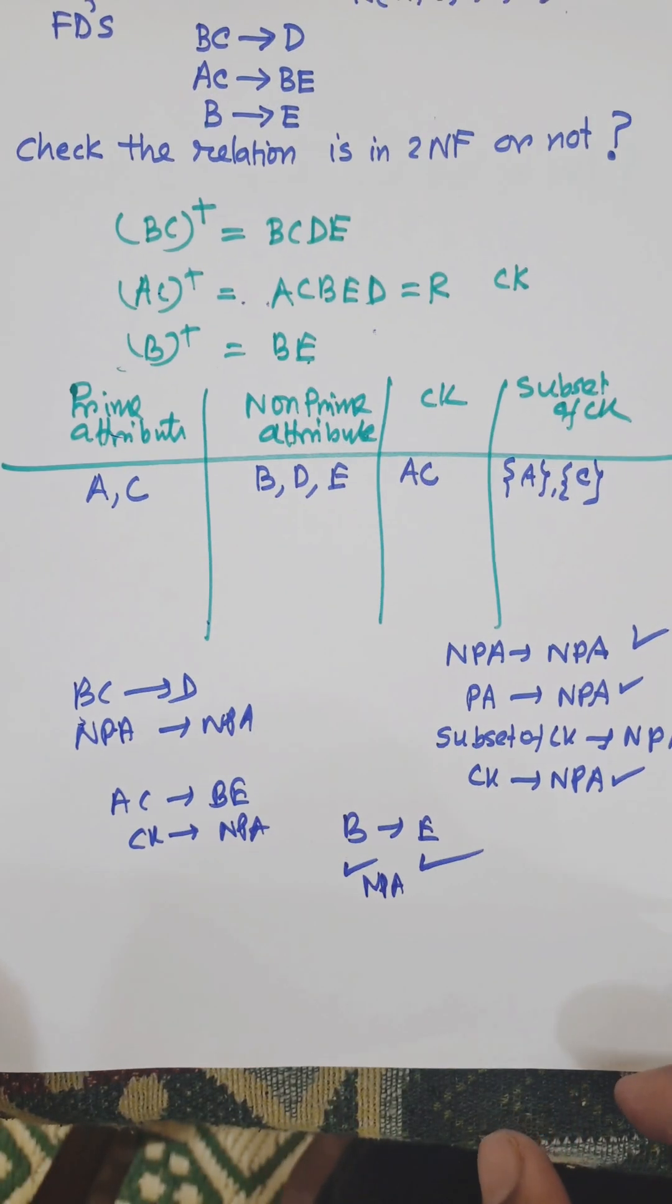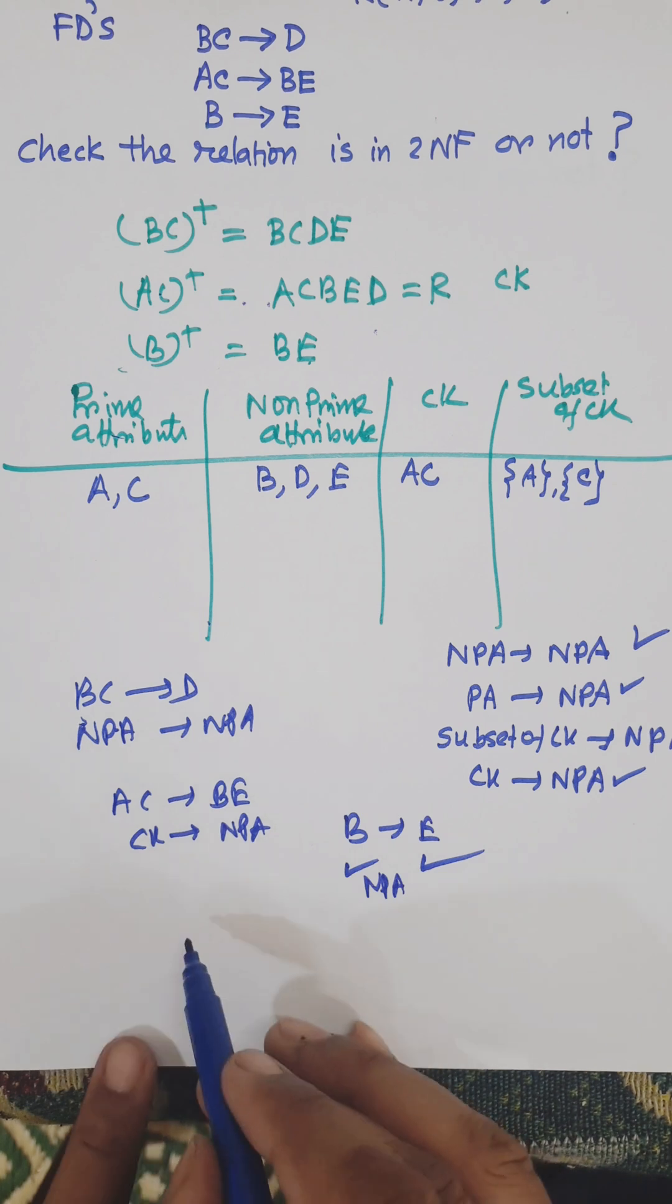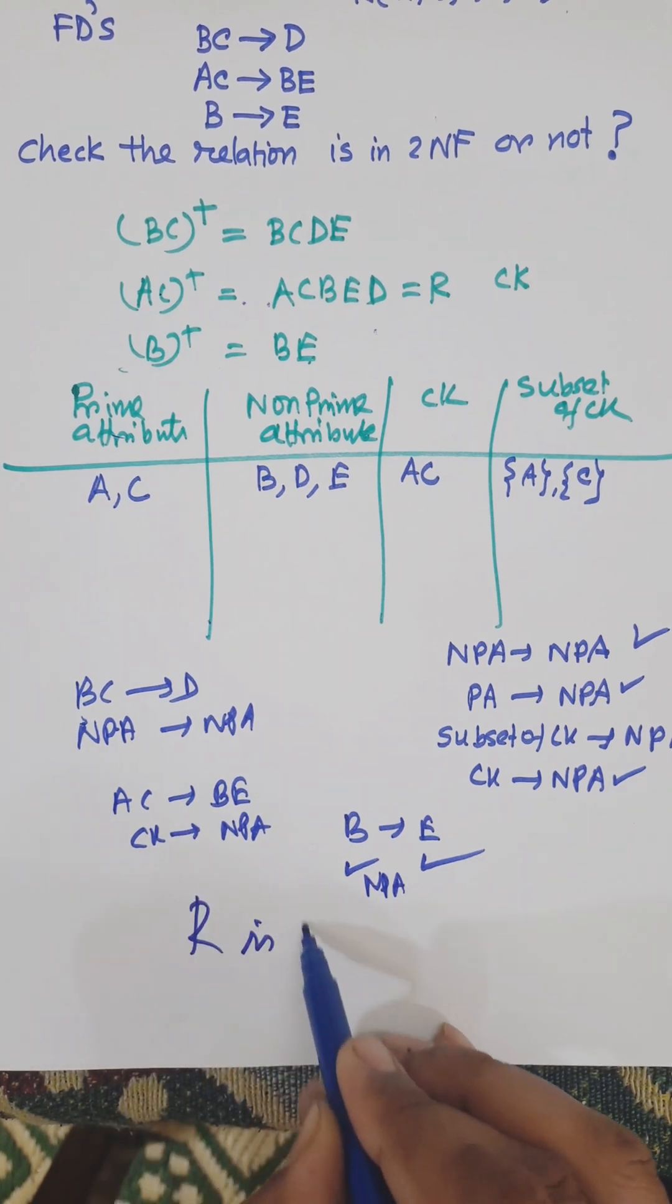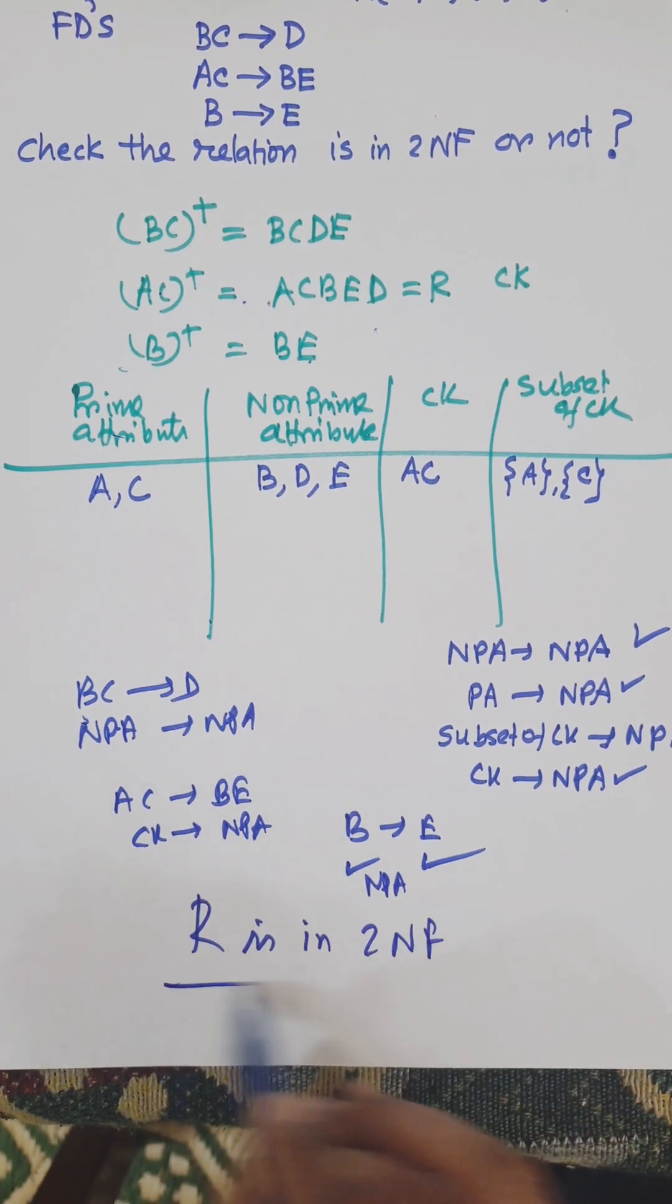From the above analysis, the relation is in second normal form. We can say R is in 2NF. Thank you.